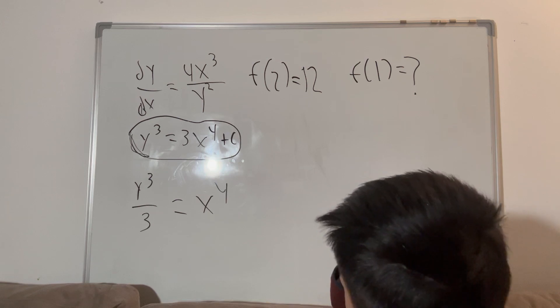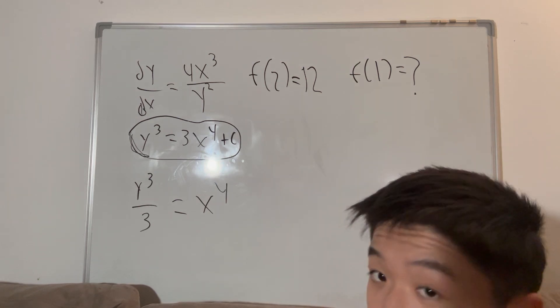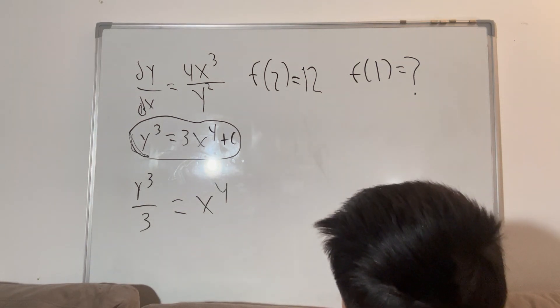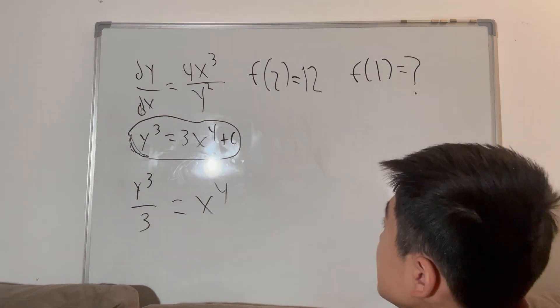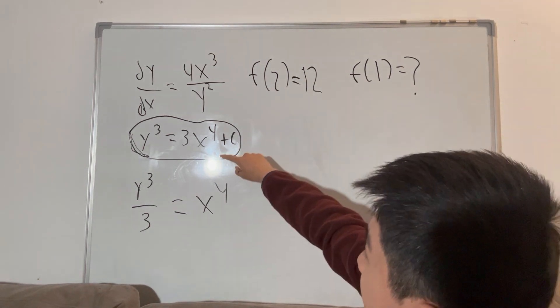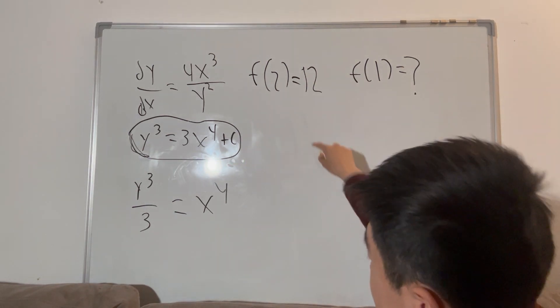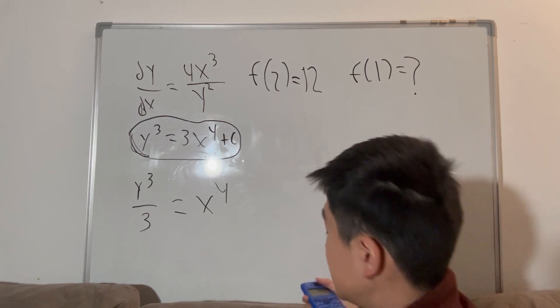So now, with our second part of our given information, we're given that f of two is equal to twelve. So what we want to do is just substitute two in for x and twelve in for y cubed. So let's just check that out.